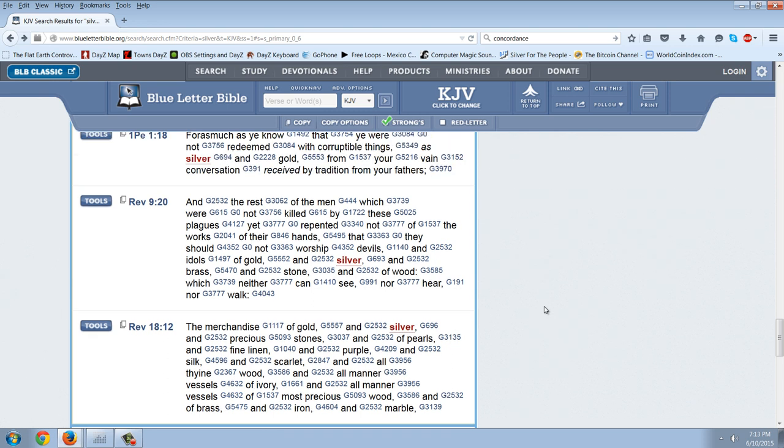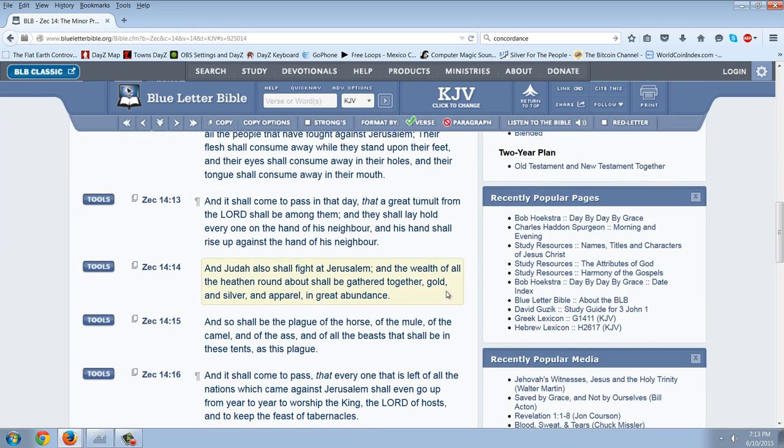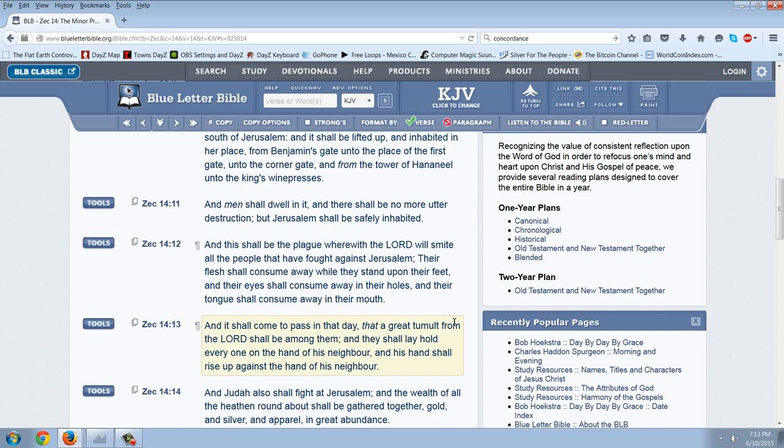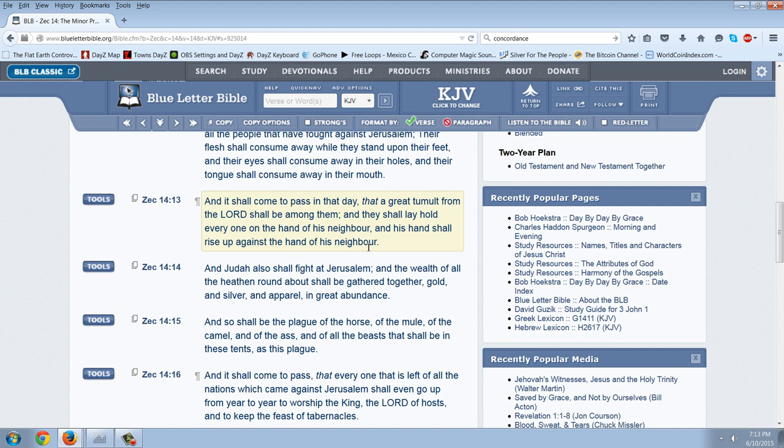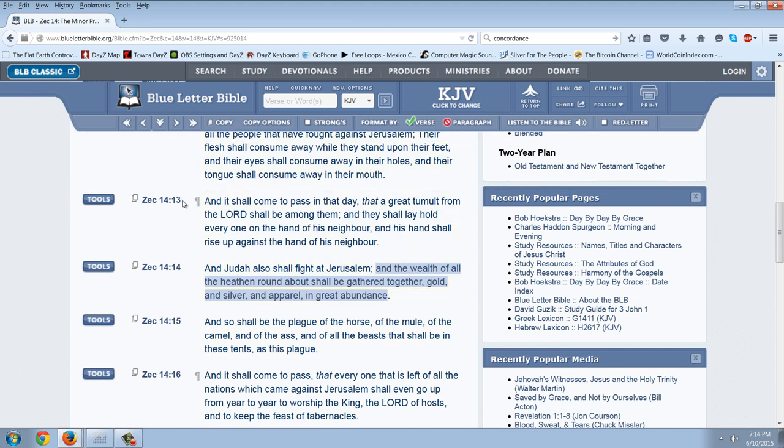Now I want to look at one other verse here that mentioned silver. This one is actually from the Old Testament. This is Zechariah 14:14, and this is a prophecy about the nations coming against Jerusalem. We know that the Armageddon will be all nations brought against Israel, and that's when the Lord will return. You can see right here it says, and this shall be the plague wherein the Lord will smite all the people that have fought against Jerusalem. Their flesh shall consume away while they stand on their feet, their eyes shall consume away, and their tongue shall consume in their mouth. So we're talking about Armageddon here. But then we can see here it says, and Judah also shall fight at Jerusalem, and the wealth of all the heathen round about shall be gathered together, gold and silver and apparel in great abundance.